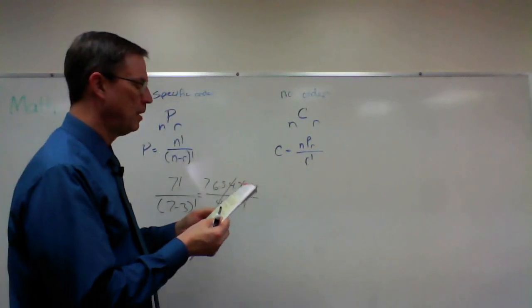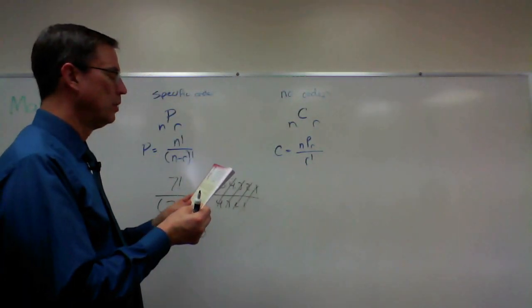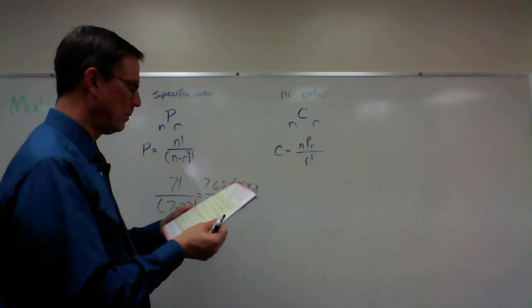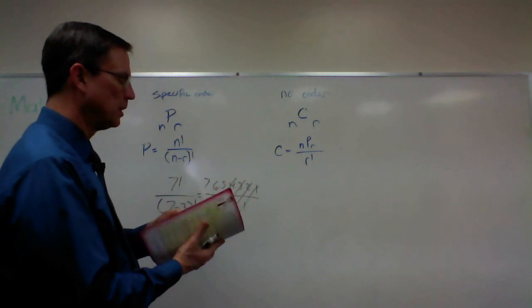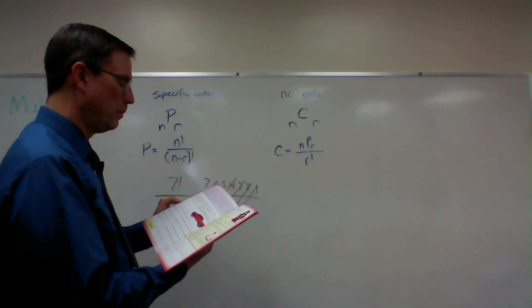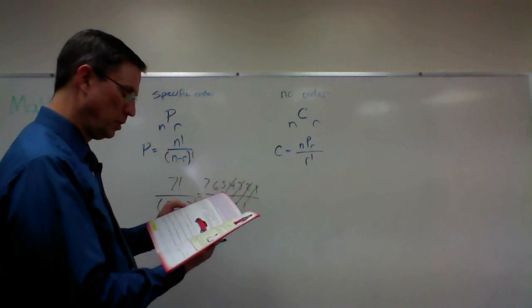So that would be the—wait, did I get this mixed up? Combination is where the order... okay, combination is where the order does not matter. Okay, I did it right. Second guessing myself while I'm making the video here. Permutation is objects arranged in a specific order.